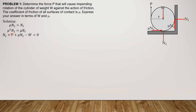Taking the moment of P about the origin — clockwise — gives P times R, minus mu·N1 times R, minus mu·N2 times R equals 0. Simplifying the force Y equation: P equals W minus N2 times quantity (1 plus mu²), so N2 equals (W minus P) divided by (1 plus mu²).